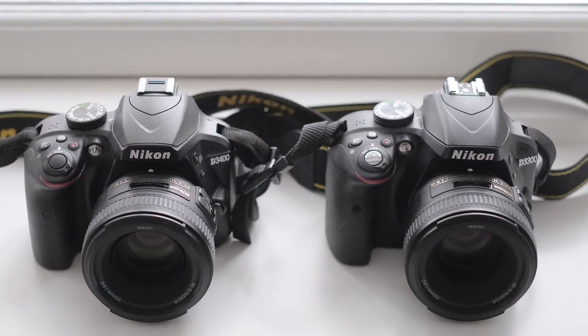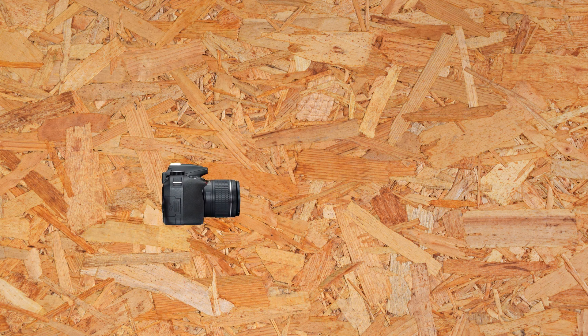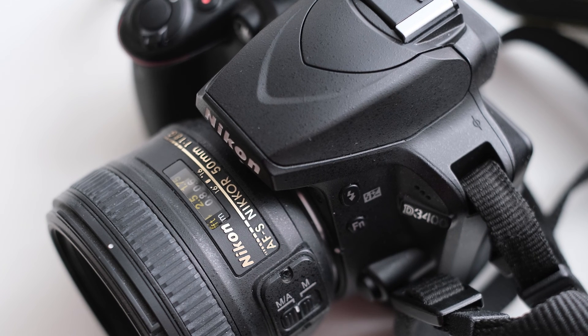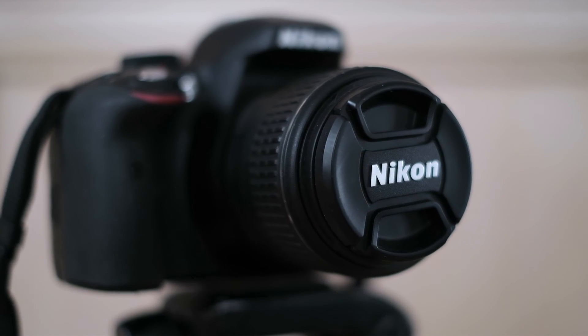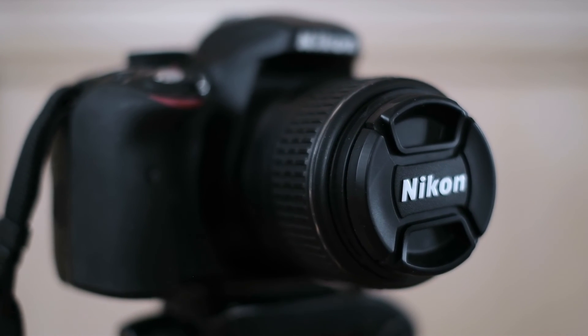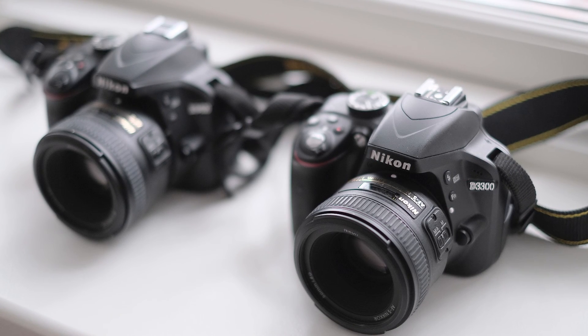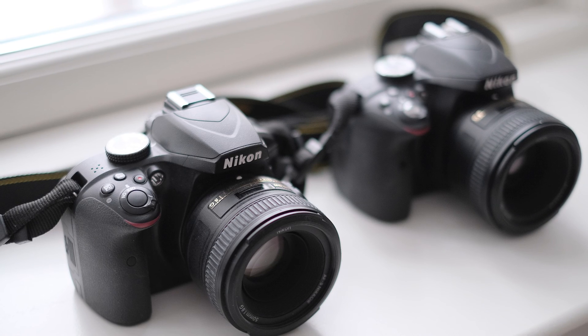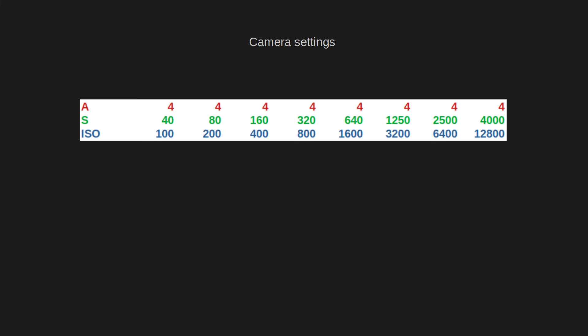Spoiler alert: yes, the two cameras are indeed different. I photographed a plywood board from one meter away with both cameras using a Nikon AF-S 50mm f1.8G lens. The cameras were carefully positioned on a tripod so that they both captured exactly the same area of the plywood board. I calibrated the white balance with a white paper, because white balance differences can influence dynamic range measurements. The photographs were taken at a constant f-stop value of 4 and at various ISO settings to observe how changes in ISO influence the superiority of one camera over the other.